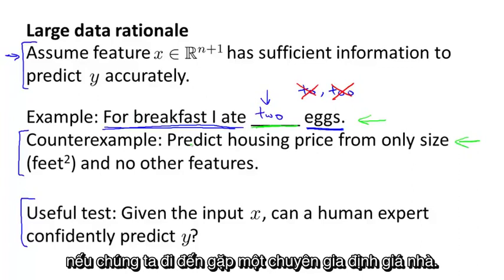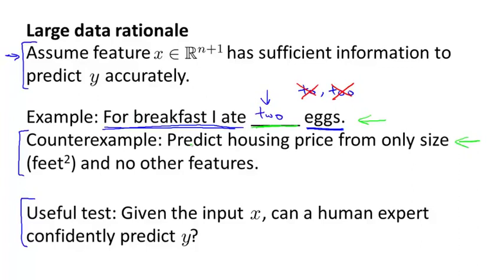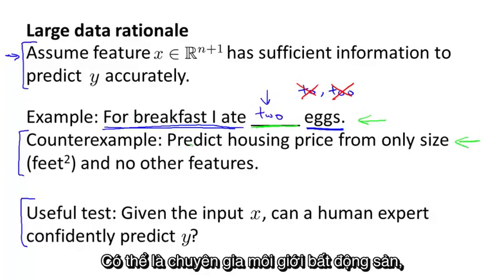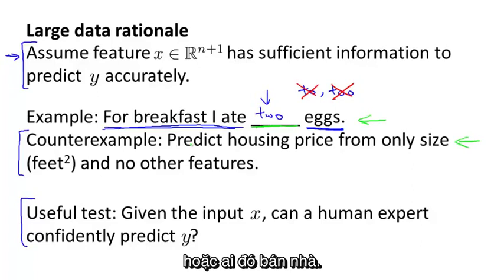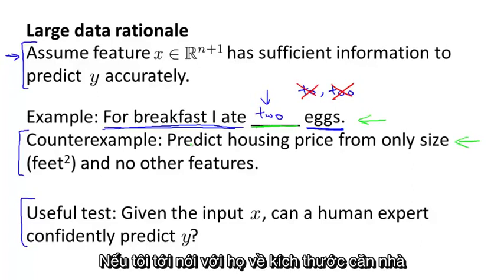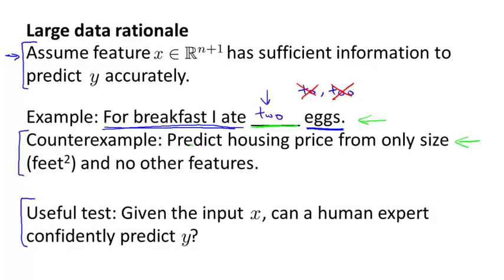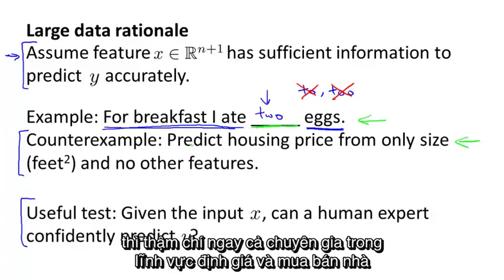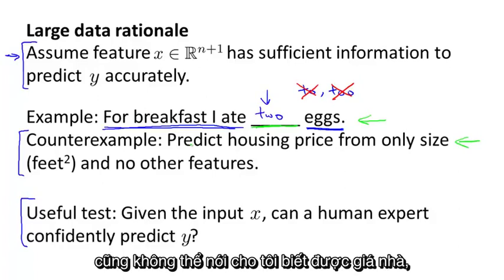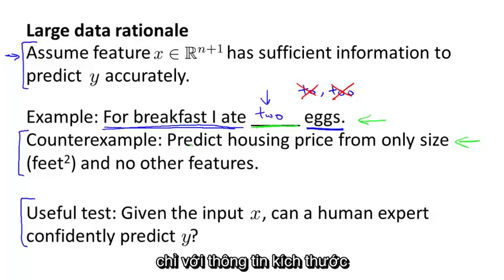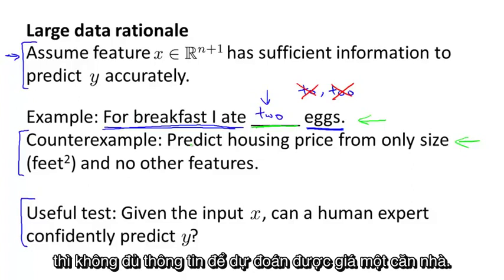But in contrast, if we go to an expert in human prices, like maybe an expert realtor, someone who sells houses for a living, if I just tell them the size of a house and I tell them what the price is, well, even an expert in pricing or selling houses wouldn't be able to tell me. And so that's a sign that for the housing price example, knowing only the size doesn't give me enough information to predict the price of the house.